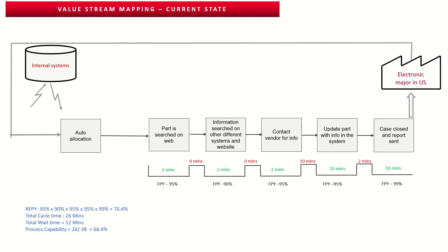With all these changes implemented, the cycle time was reduced to 26 minutes and wait time was reduced to just 12 minutes. Process capability improved from 3.8% to 68.4%, and the rolled first pass yield increased from 13.68% to 76.4%. The team then started delivering overall product information within two working days TAT.